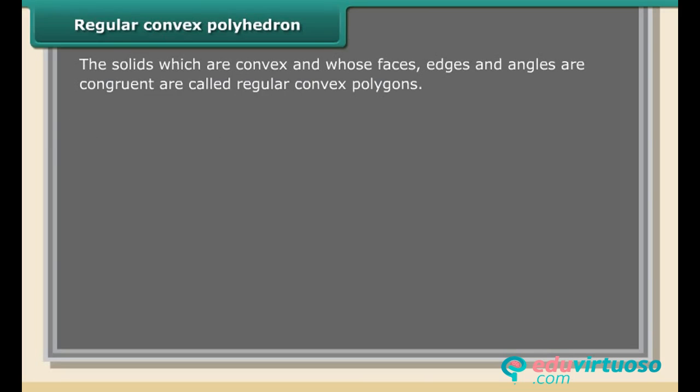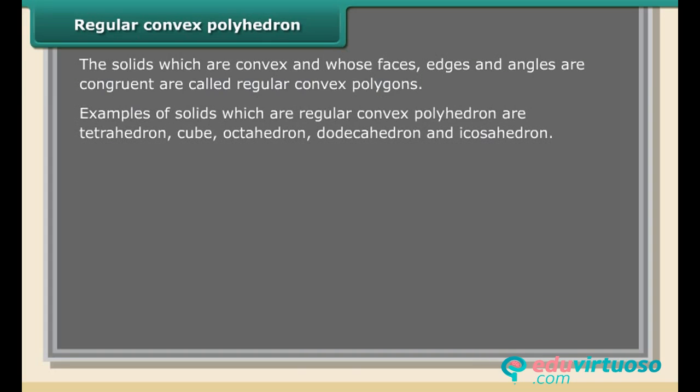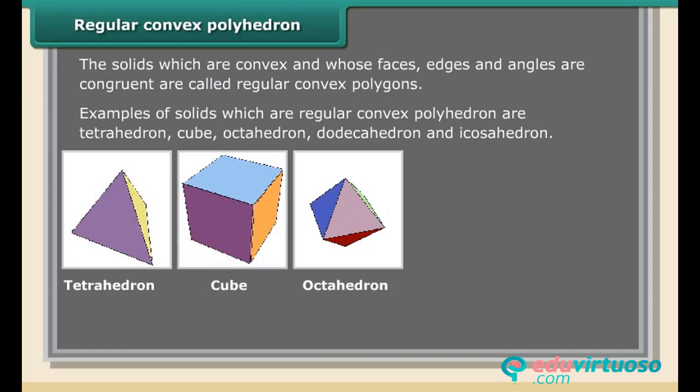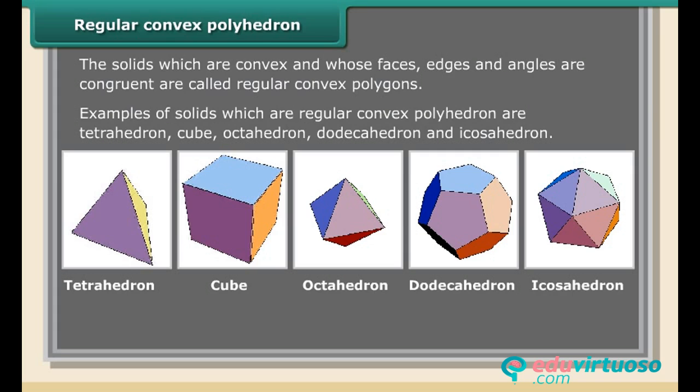Regular convex polyhedron: The solids which are convex and whose faces, edges, and angles are congruent are called regular convex polyhedrons. Examples of solids which are regular convex polyhedrons are tetrahedron, cube, octahedron, dodecahedron, and icosahedron.